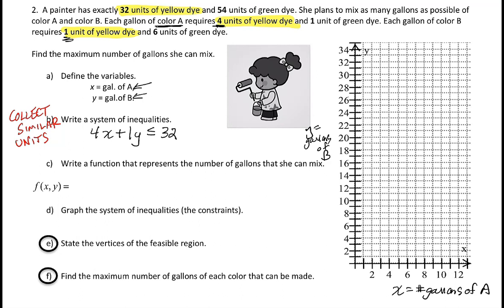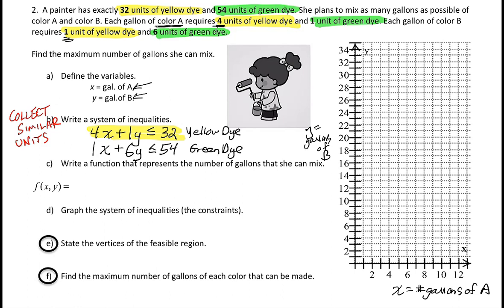This is our yellow dye constraint, highlighted in yellow. Then we have information about green dye: 54 units total, one unit per gallon of A, and six units per gallon of B. Writing that out: X + 6Y ≤ 54. That's our green dye constraint, highlighted in green.